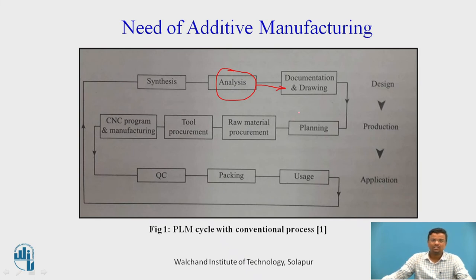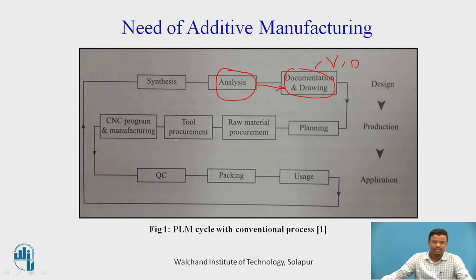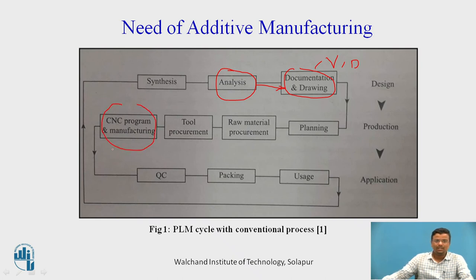After documentation, there is computer-aided process planning, which determines the raw materials, tools, and machine tools to use. For CNC machine tools, a CNC program is developed. After the product is developed, a quality control engineer checks it, and the final product is assembled and handed over to the customer. This is product lifecycle management with respect to the conventional process.